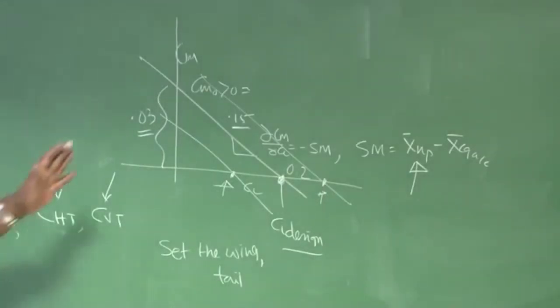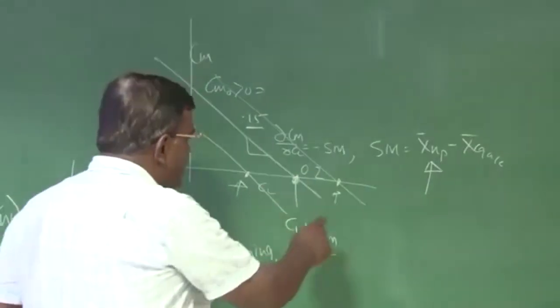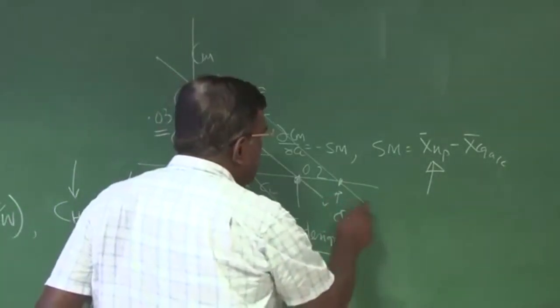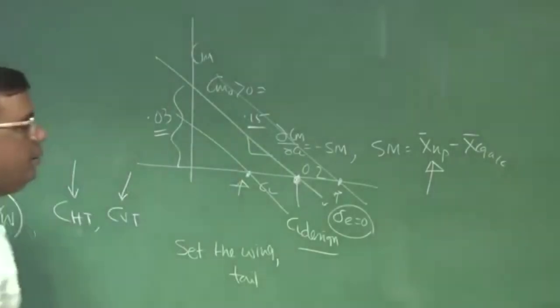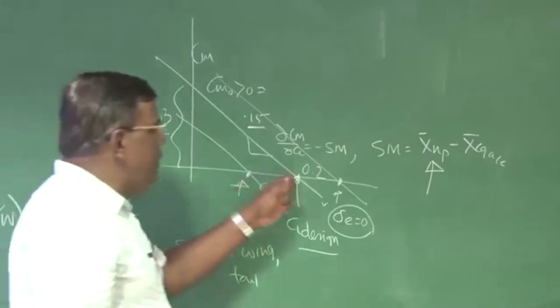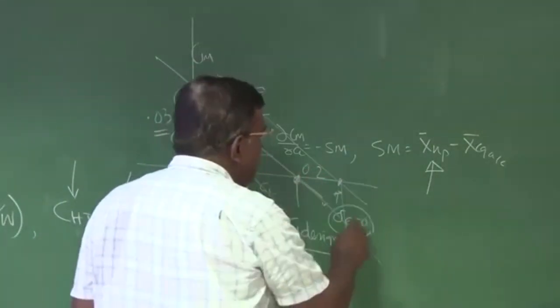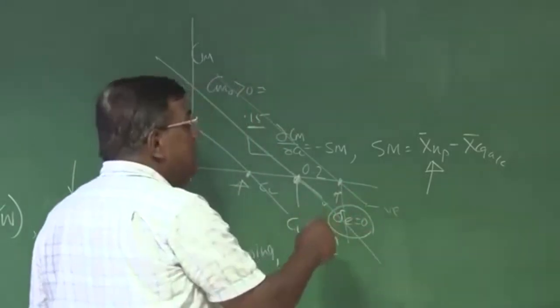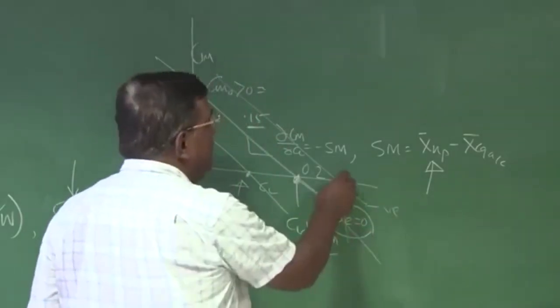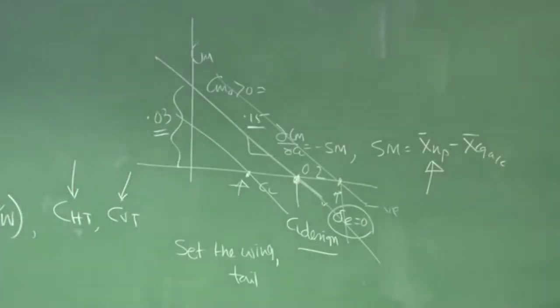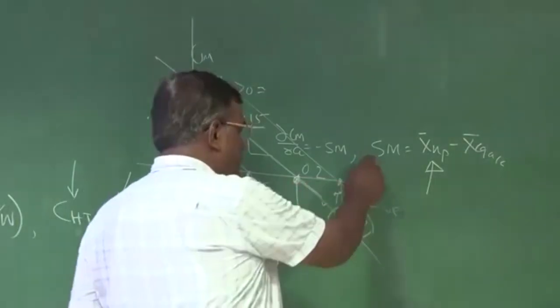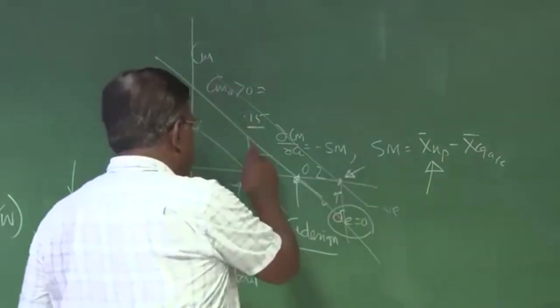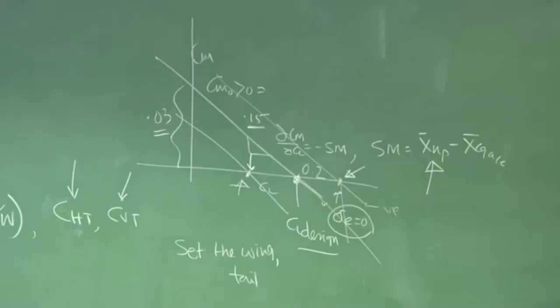Because when I am designing the basic configuration, that time I will ensure that the elevator requirement is 0 so that trim drag is 0. But when I have to go from here to here, you could see that immediately it will generate negative pitching moment. So I have to counter that by giving elevator up. How much elevator deflection do I need when I want to fly at this CL? That is typically the control problem.